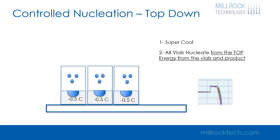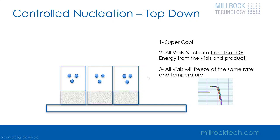Notice that this is from the top down, not the bottom up. Because of controlled nucleation, we can have all of the vials in the batch nucleate at the same time, at the same rate, giving us a very uniform structure across the batch. If we look at the product temperatures, they all nucleate at the same time and freeze at the same rate. It's important to understand that in some cases this will enhance the primary drying process, but in cases where we have a small fill or a very high solid content, controlled nucleation will not shorten the primary drying time. The most important thing about controlled nucleation is giving you consistency across your batch, which improves the quality of the product.